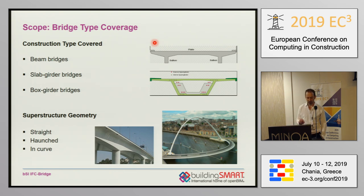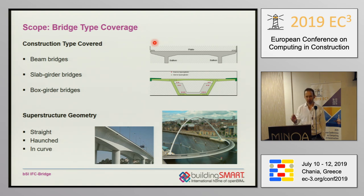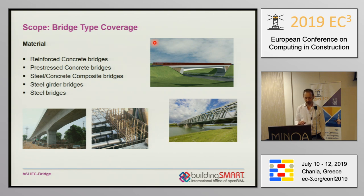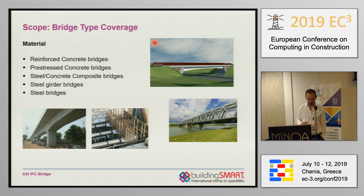We then defined the scope for construction types, which in bridge engineering are closely related to cross-sections. We decided to support beam bridges, slab girder bridges, and box girder bridges. With respect to superstructure geometry, it was important to cover the broad range — straight, haunched, incurved, etc. — all should be supported. Regarding materials, typical ones include reinforced concrete bridges and pre-stressed concrete bridges. Pre-stressing systems are not very common in buildings but very common in bridges, so we had to work there intensively. We also supported steel-concrete composite bridges, steel girder bridges, and steel bridges.